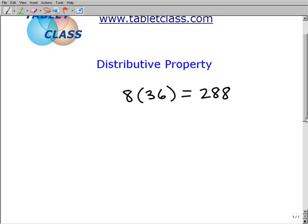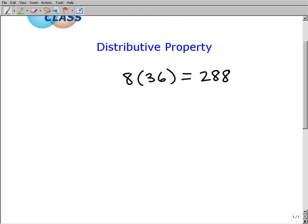The distributive property allows us to do the same problem, but in a little bit different manner. What it says is this: I have 8 times 36. If I can rewrite this number here, 36, or whatever I'm multiplying by, as a sum or difference of two other numbers, I can approach this problem differently.